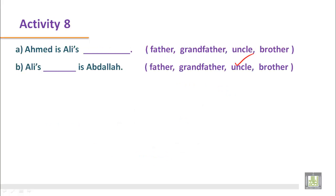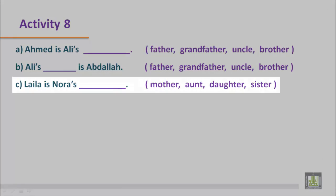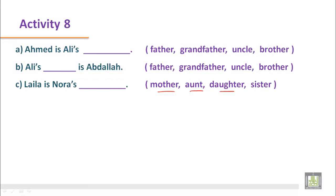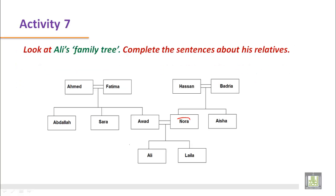Ali's uncle is Abdullah. Next, Lila is Noura's: mother, aunt, daughter, or sister. What is the relationship between Lila and Noura? This is Noura and this is Lila. We can say Lila is Noura's daughter.